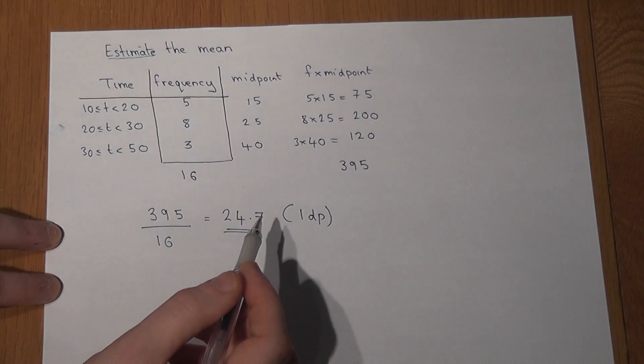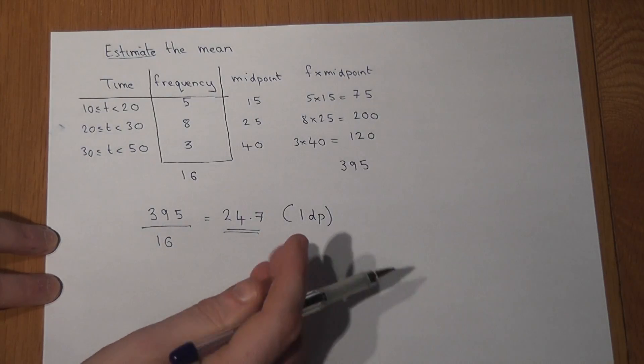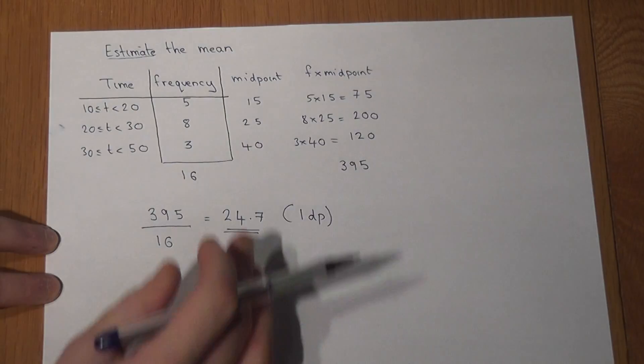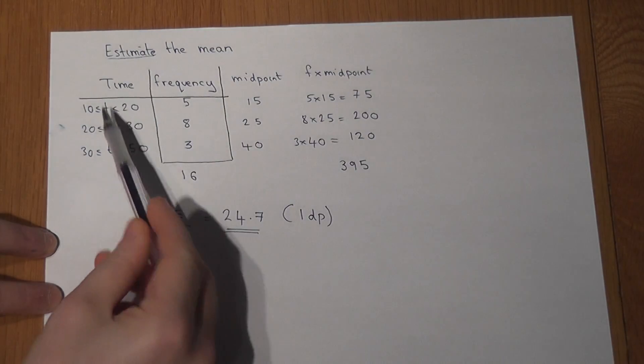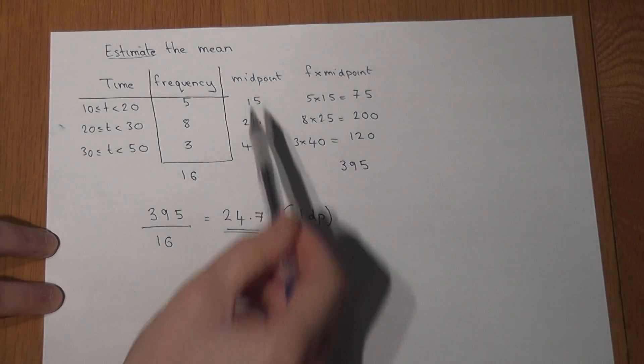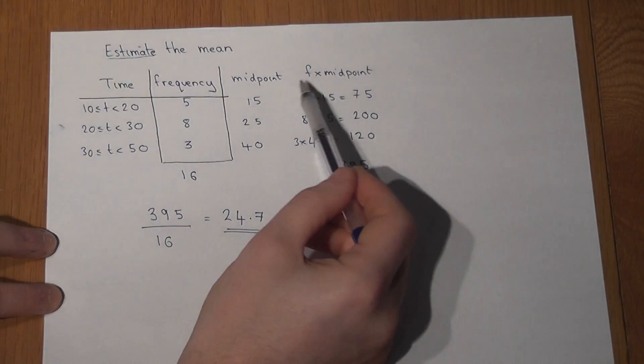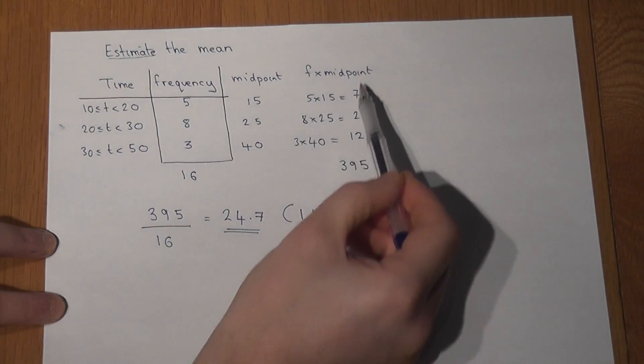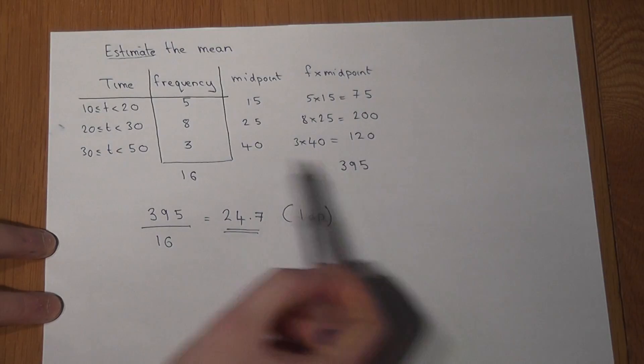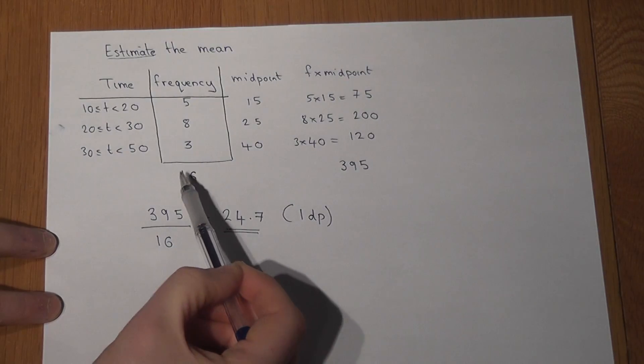That's where to check your answer afterwards, not exactly but normally somewhere in the middle. So again, time and frequency, we do the midpoint, we do the frequency times the midpoint, we add all those up, and we divide by the total number of people.